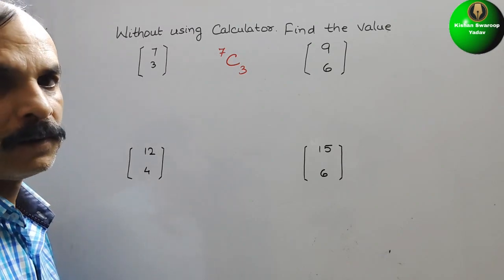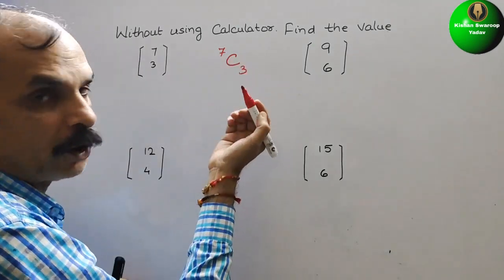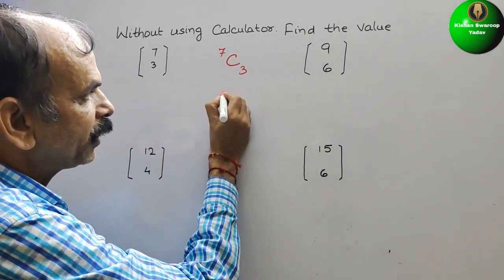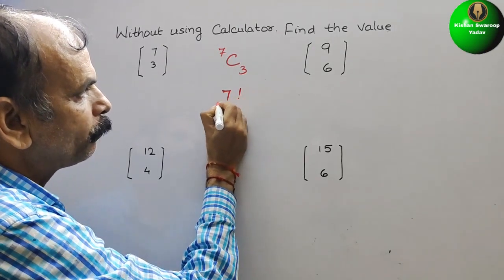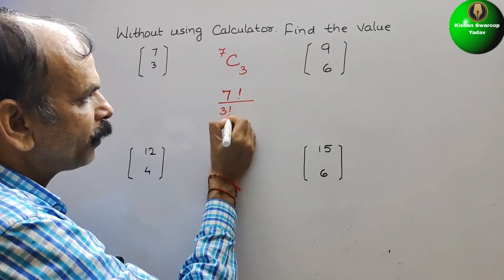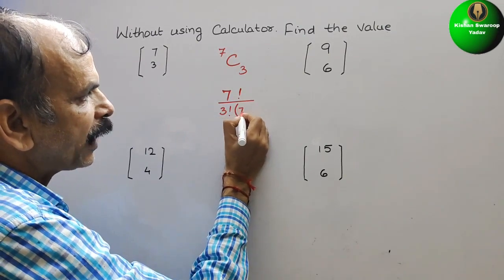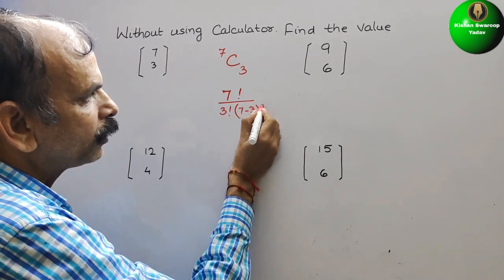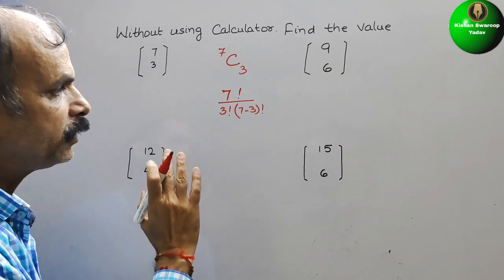So how? The combination of this is what? So this is nothing but 7 factorial by 3 factorial by 7 minus 3 factorial. So this is the formula.